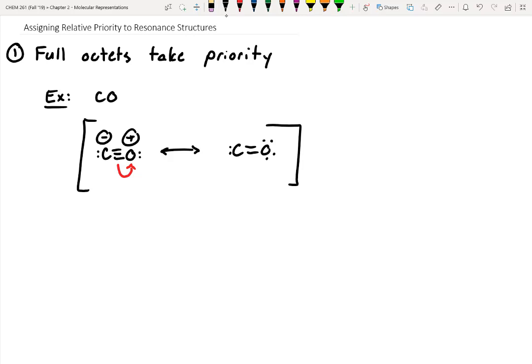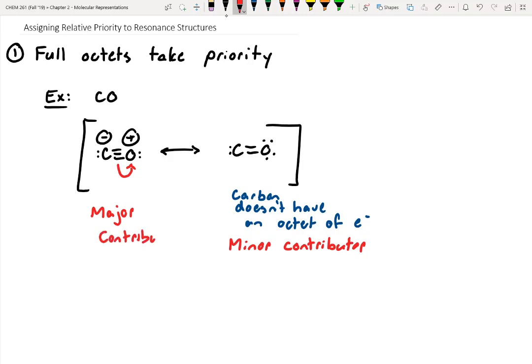What's the problem though with drawing it this way? Carbon does not have a full octet. That means that this is going to be the minor contributor. This one, on the other hand, must be our major contributor. Even though the oxygen has a positive charge, the oxygen has an octet and the carbon has an octet. That means that it must be the more important contributor to the resonance structures.